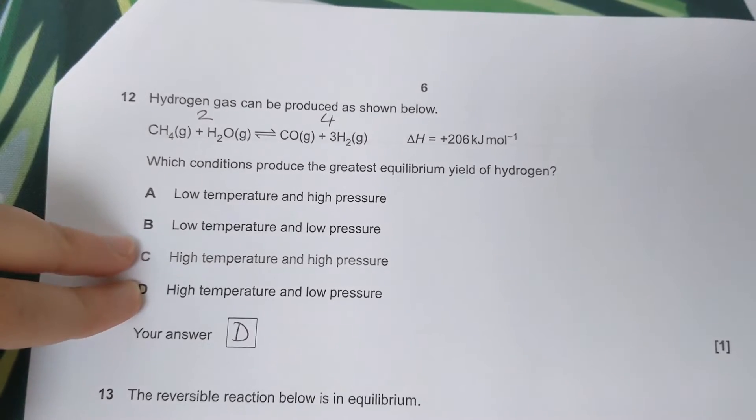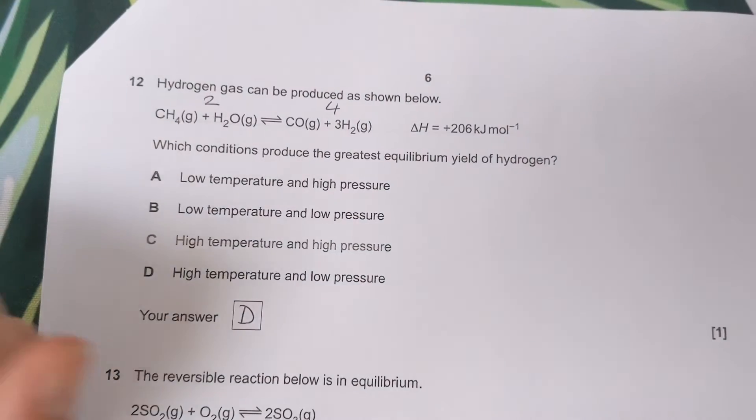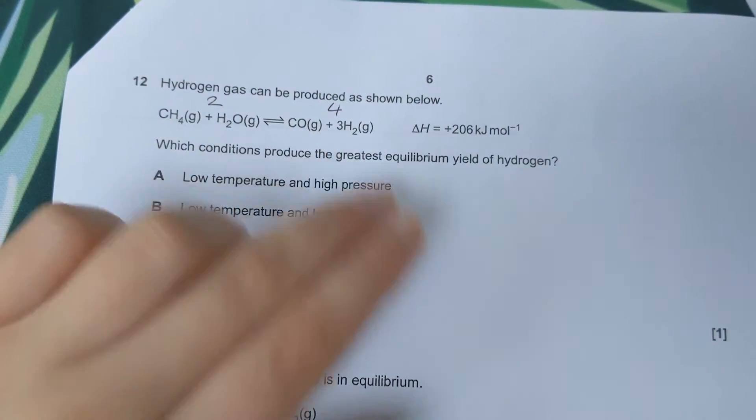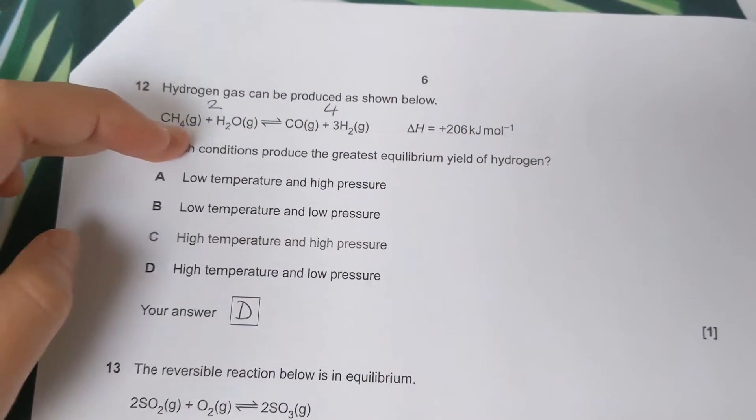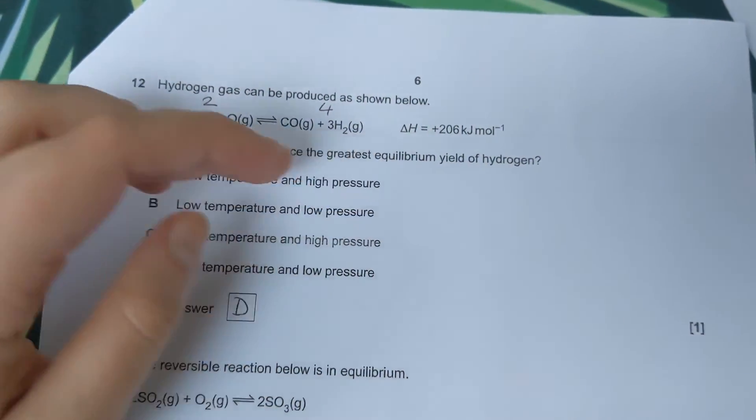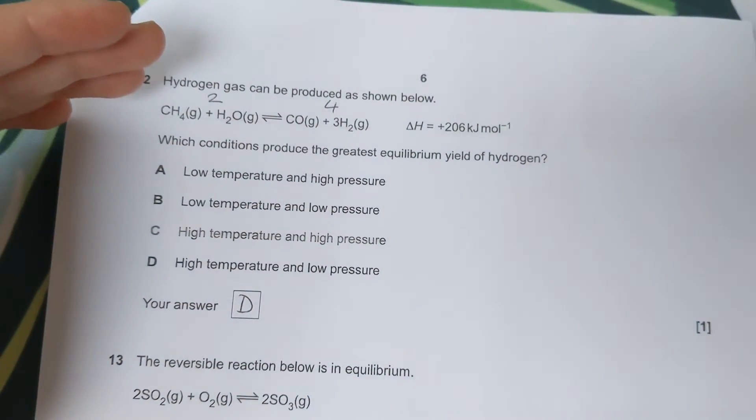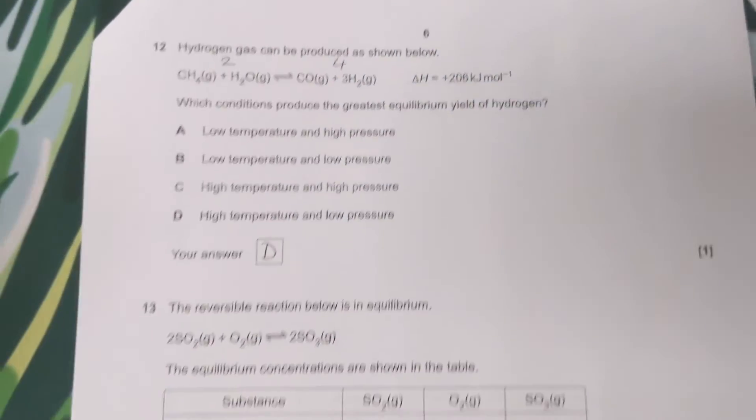Then for pressure, we can see everything's in the gas phase. Pressure's only relevant when we have gases. We count the number of gas moles on the left, count the number of gas moles on the right. If we want to move the reaction to the right, the side with the most gas moles, then we need to decrease the pressure. So the correct answer is D, high temperature and low pressure.